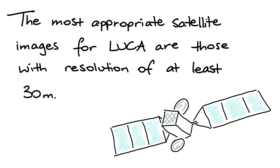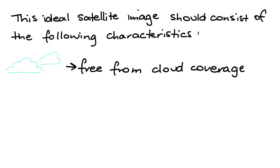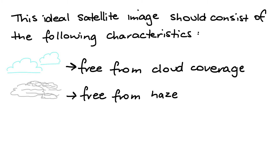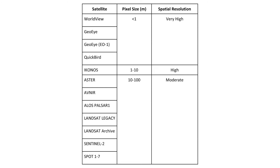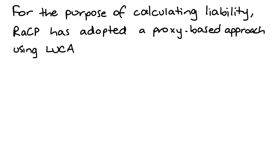The most appropriate satellite images for LUCA are those with a resolution of at least 30 metres. A satellite image is considered to have good quality when it allows good land cover interpretation and classification. This ideal satellite image should consist of the following characteristics: free from cloud coverage, free from haze, and free from sensor errors.